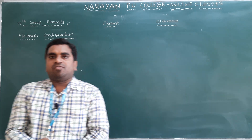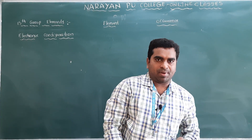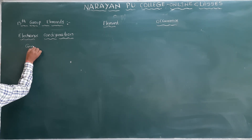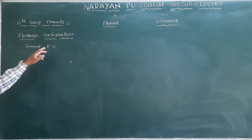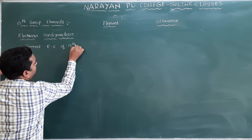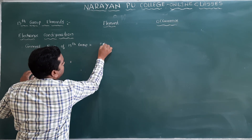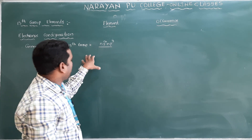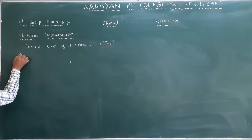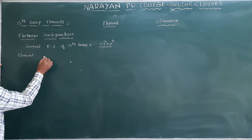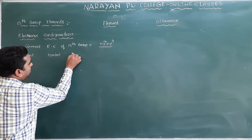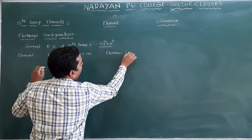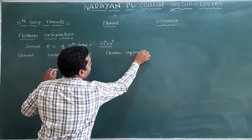Next is the electronic configuration of the 15th group elements. The general electronic configuration of the 15th group elements is ns² np³. Let us make a table with element, symbol, atomic number, and electronic configuration. The elements are nitrogen, phosphorus, arsenic, antimony, and bismuth.